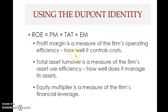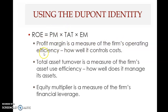On the next slide, we see the same DuPont identity. The first component — profit margin — is a measure of the firm's operating efficiency: how well it controls costs.